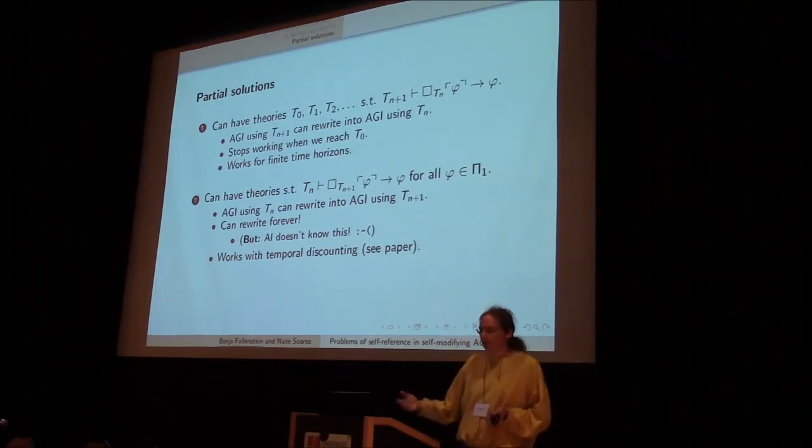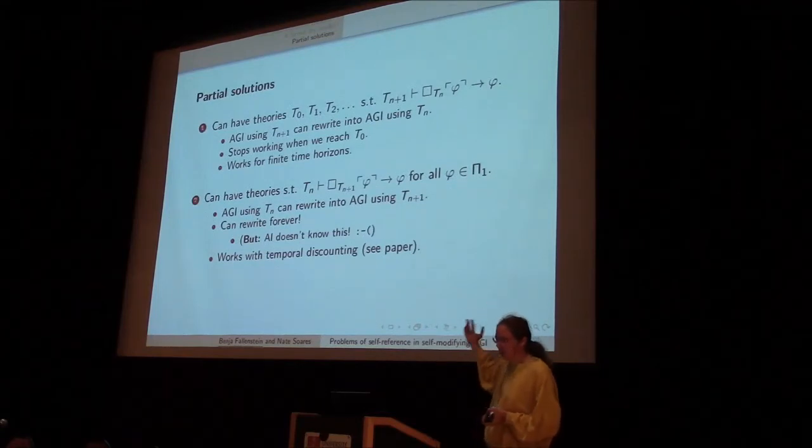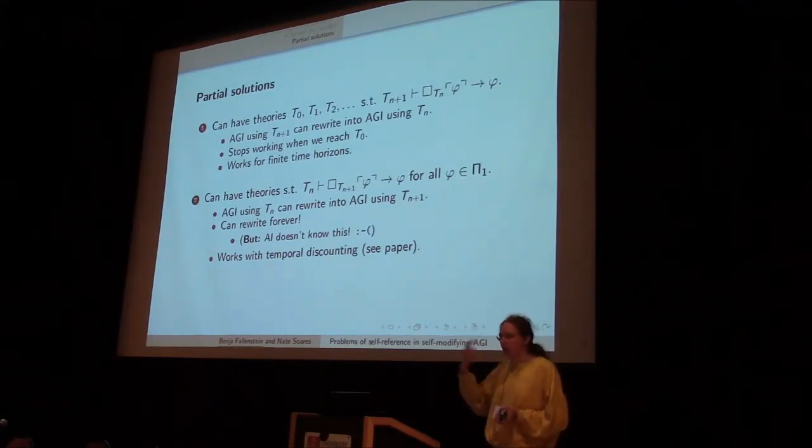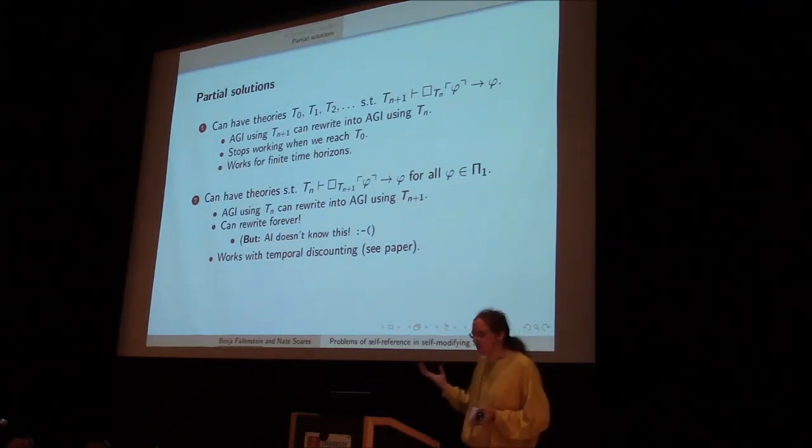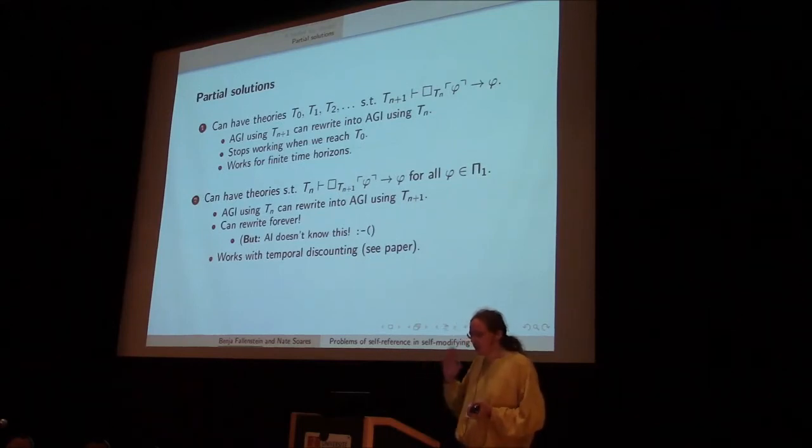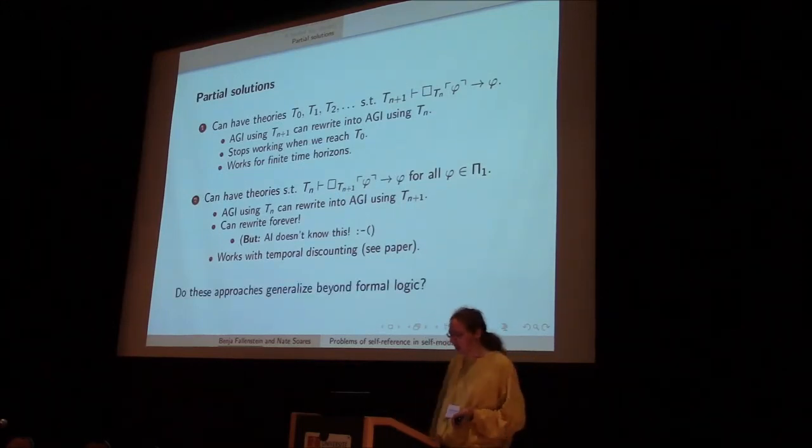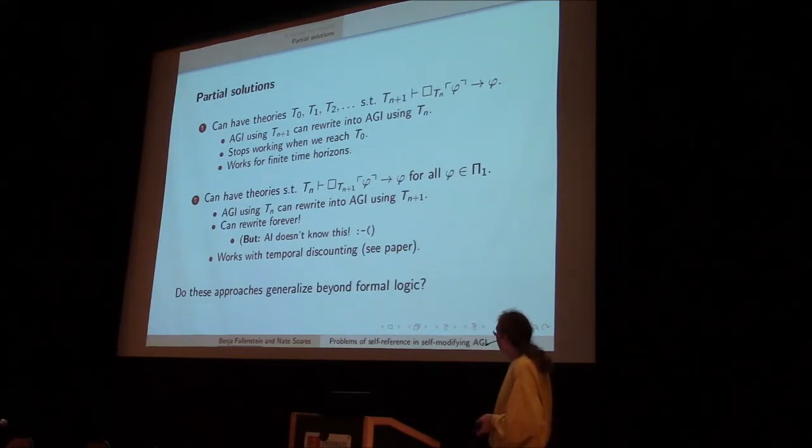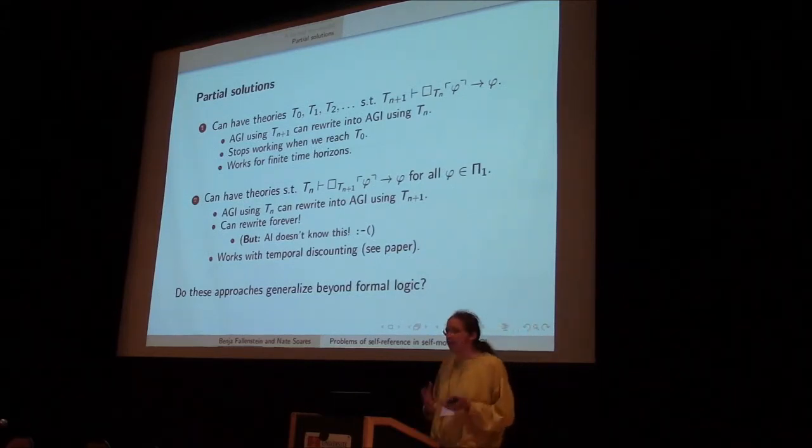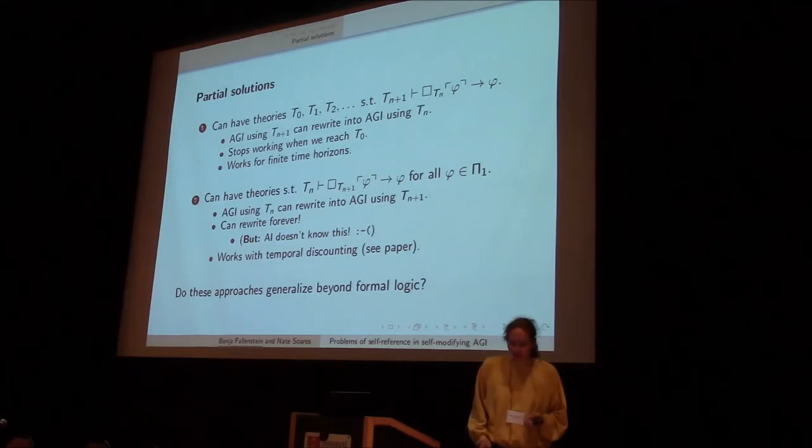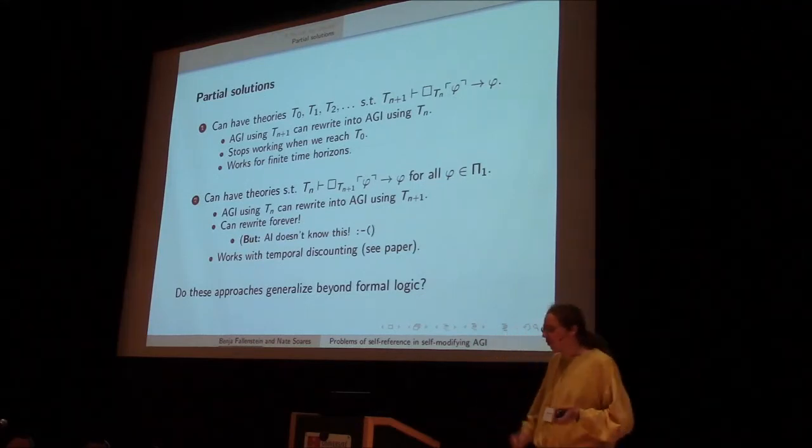But we show in the paper that with this rule, with Π1 sentences, you can't get into the procrastination paradox from the beginning of the talk, but you can handle temporal discounting. And so the question is, does this tell us something about formal logic, beyond formal logic?